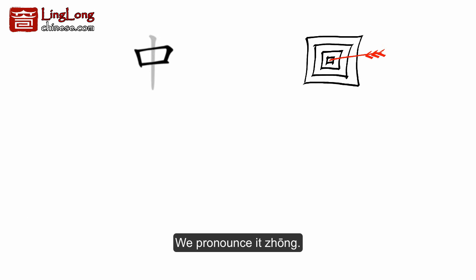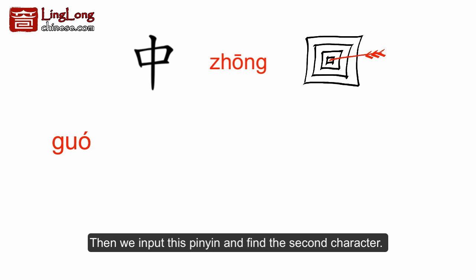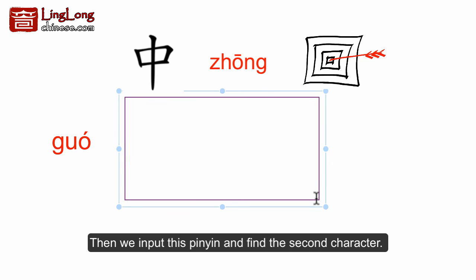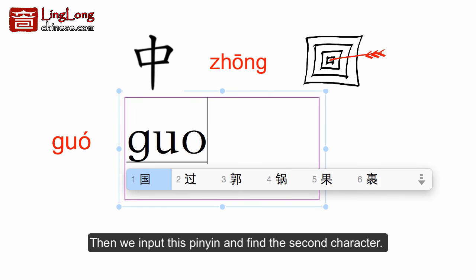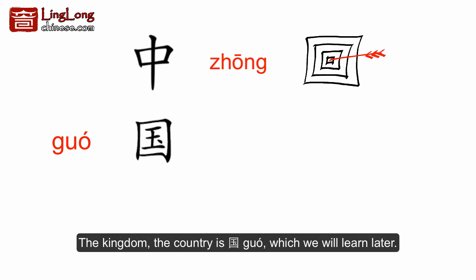We pronounce it 'zhōng.' Then we input this pinyin and find the second character — the kingdom, the country, which we will learn later.